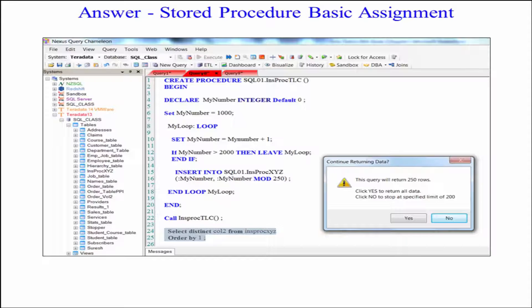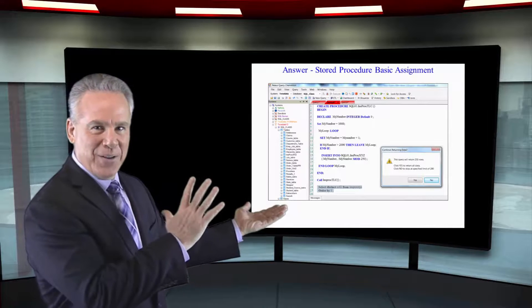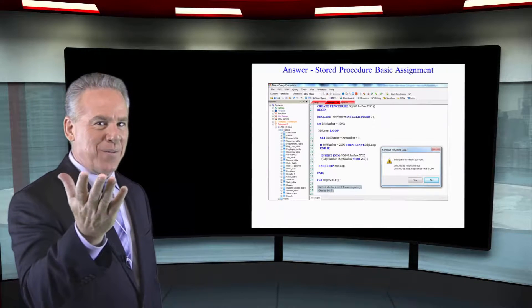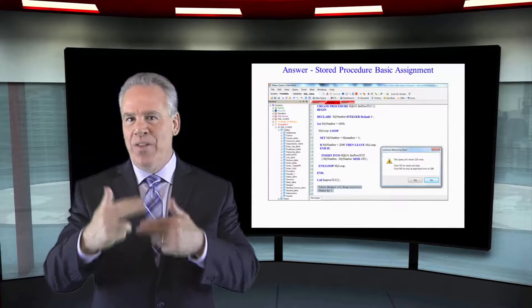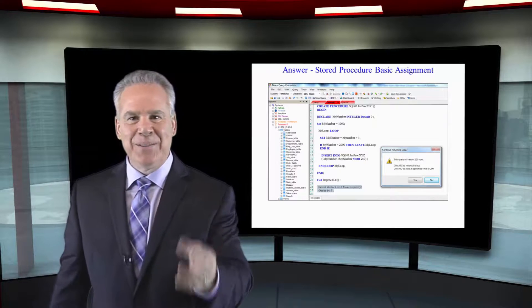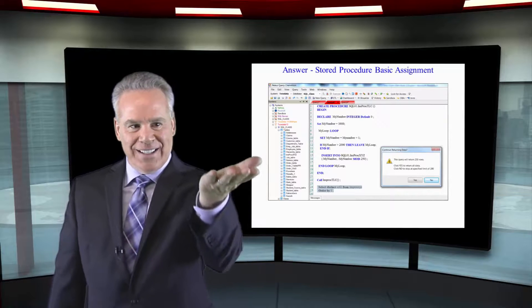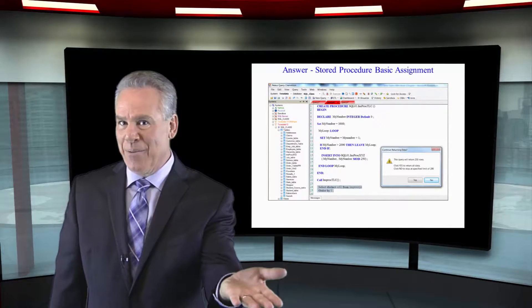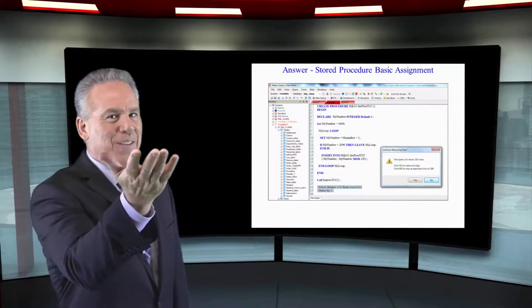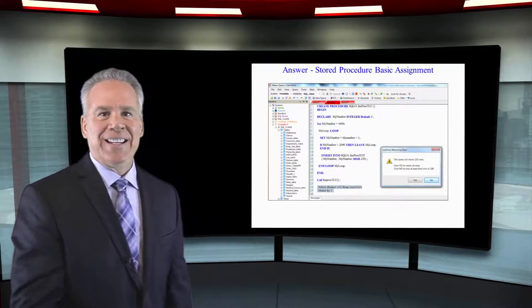Here you can see I insert into my table colon MYNUMBER and then colon MYNUMBER mod 250, which is going to divide my number by 250 and give me the remainder. And this is going to loop 1,000 times. And at the end, I'm going to have 1,000 rows in here and 1,000 distinct numbers in column 1 and 250 distinct numbers in column 2.